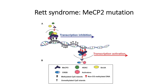MECP2 will attract Sin3A — all symbol names are mentioned at the bottom of the image. In the case of a mutated MECP2, it binds to the methylated CpG island and attracts Sin3A and HDAC, which will inhibit the transcription of this CpG island.